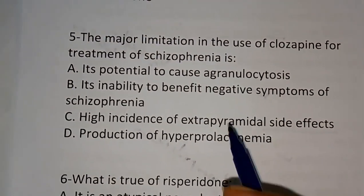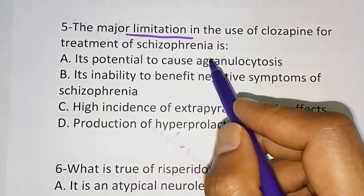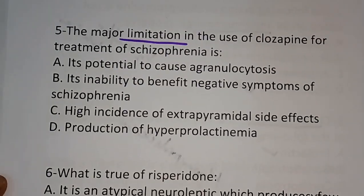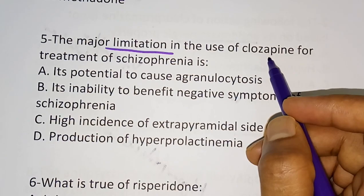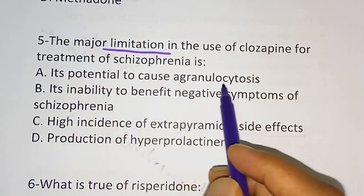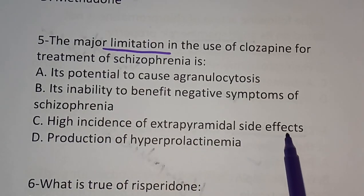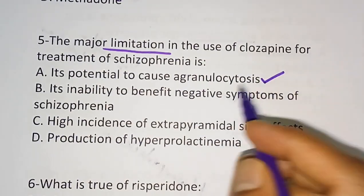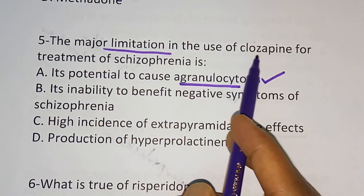Question 5: The major limitation in the use of clozapine for the treatment of schizophrenia. Clozapine is an atypical antipsychotic. Options are: its potential to cause agranulocytosis, its inability to benefit negative symptoms of schizophrenia, high incidence of extrapyramidal side effects, production of hyperprolactinemia. The correct answer is agranulocytosis. This clozapine will cause agranulocytosis, and because of that its use is limited.